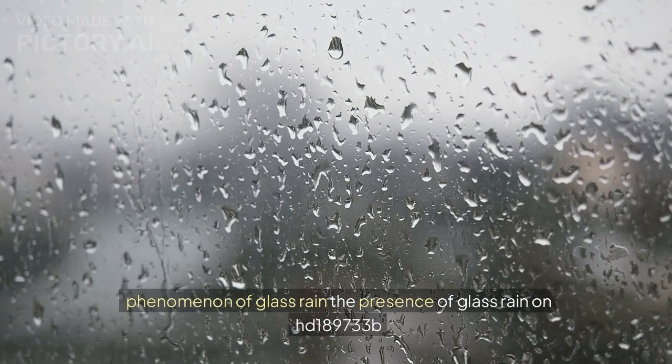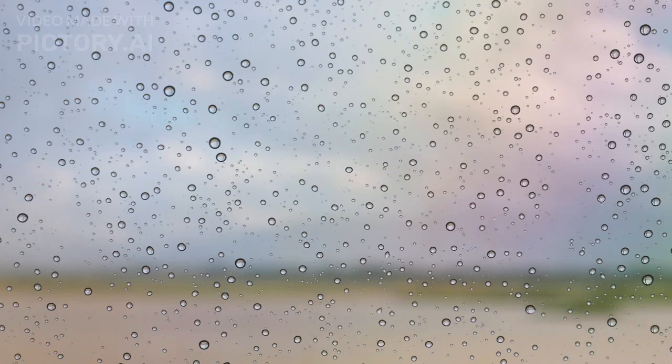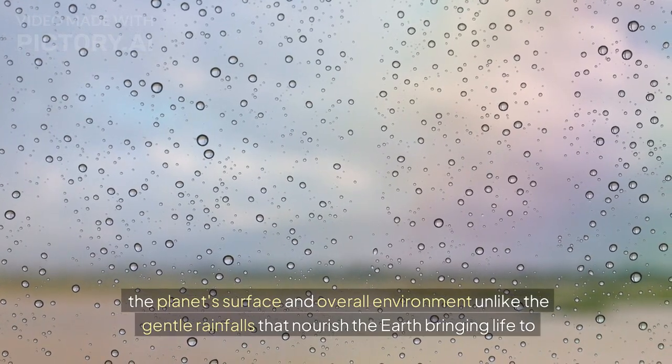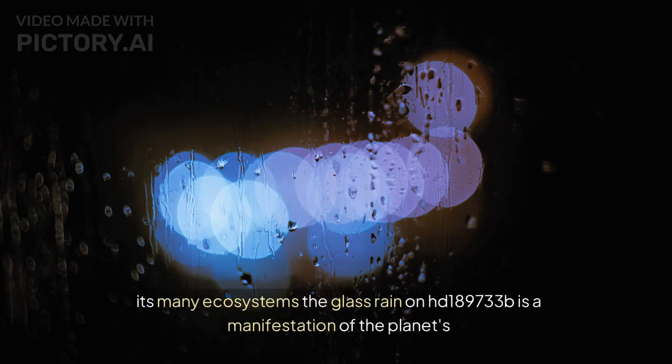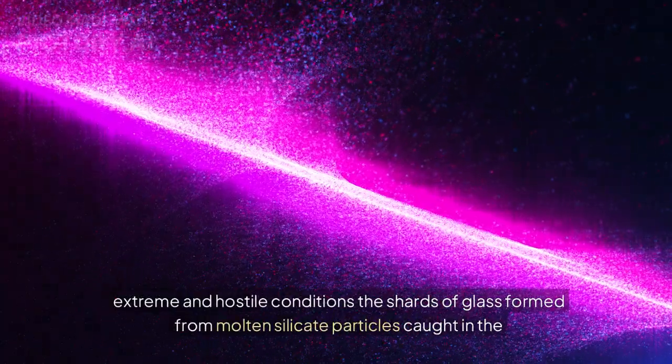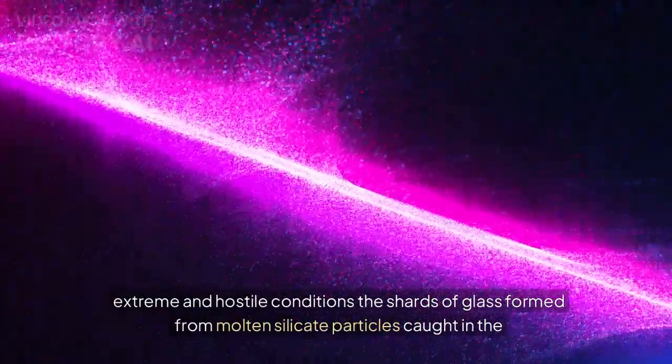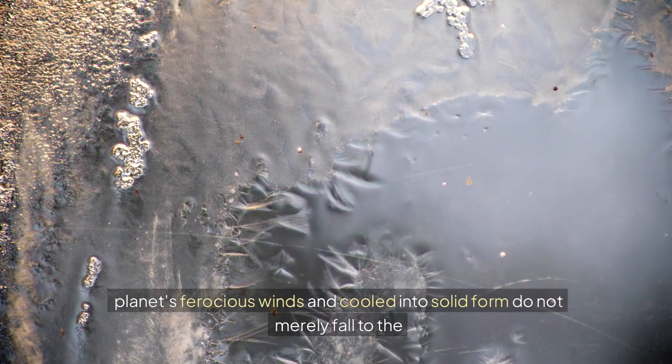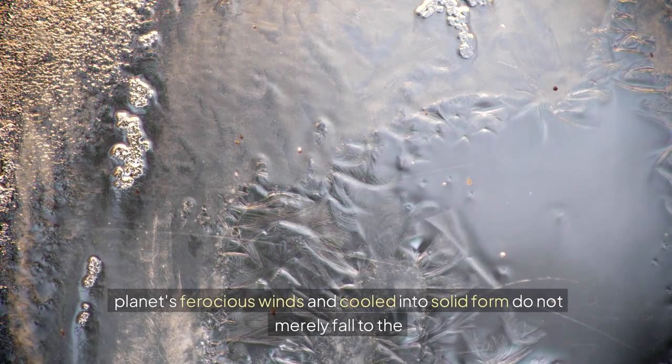The presence of glass rain on HD 189733b, a phenomenon as intriguing as it is violent, has profound implications for the planet's surface and overall environment. Unlike the gentle rainfalls that nourish the Earth, the glass rain on HD 189733b is a manifestation of the planet's extreme and hostile conditions. The shards of glass, formed from molten silicate particles caught in the planet's ferocious winds and cooled into solid form, do not merely fall to the surface.